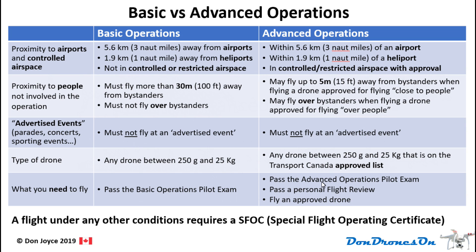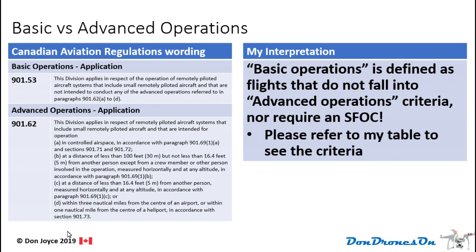This is a really important chart to understand. Regulation 90153 defines basic operations and 90162 defines advanced operations. Strangely enough, basic operations are basically defined as flights that do not fall into the advanced operations criteria, nor require an SFOC. It's probably easier to just refer to my table to understand the criteria.